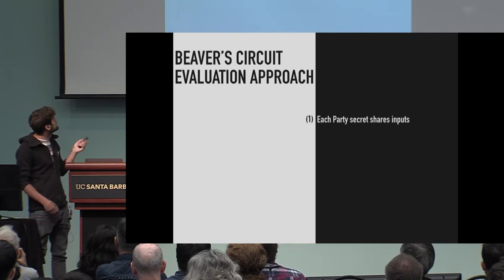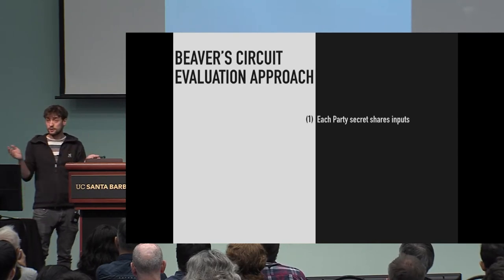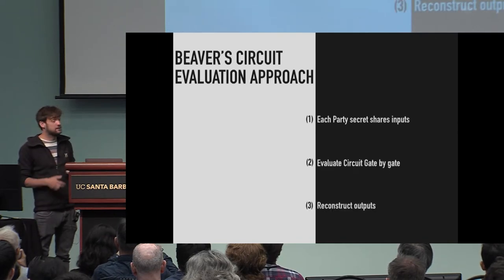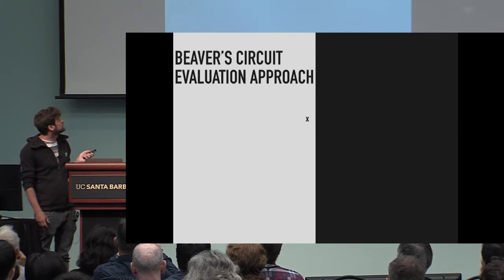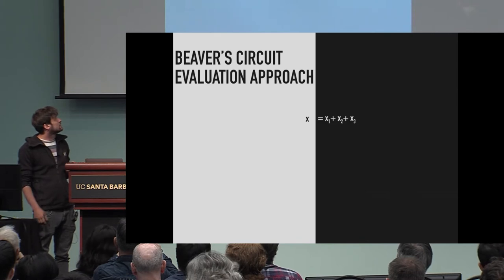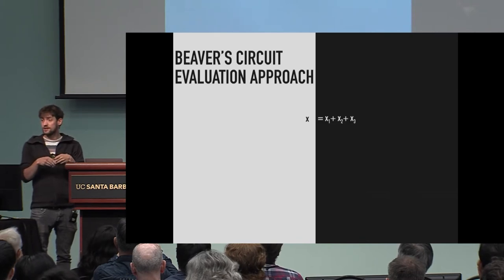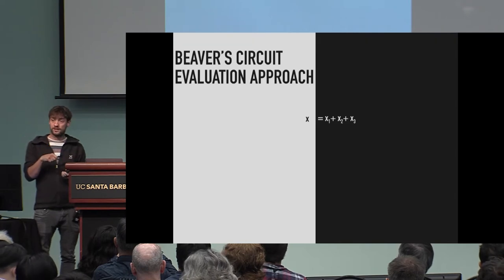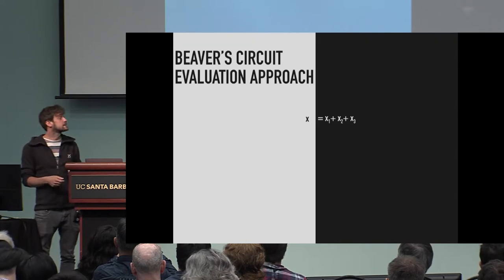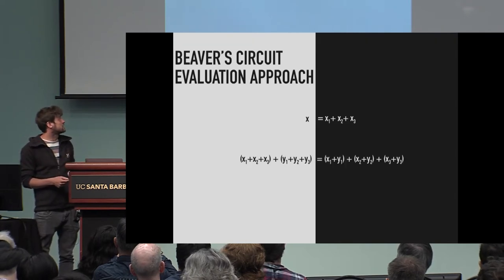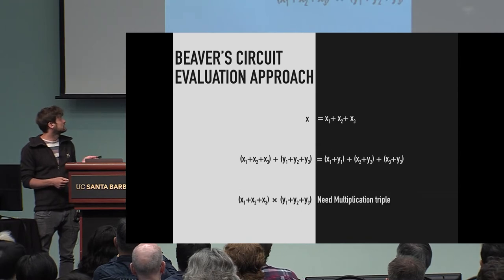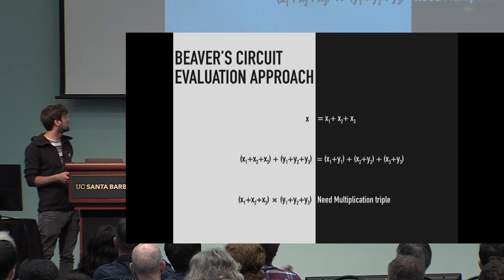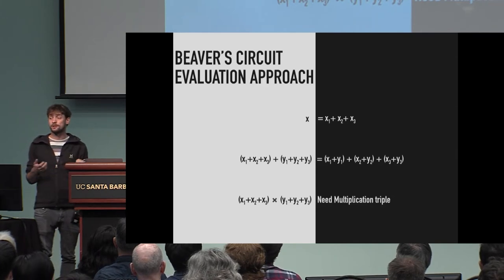In Beaver's circuit evaluation approach, everybody additively secret shares his input, evaluates the circuit gate by gate, and then reconstructs the outputs. For example, input x is split for three parties into x1, x2, and x3, and each real player gets one share. Addition is done locally; multiplication requires a multiplication triple. The question is how to generate these multiplication triples efficiently over rings.